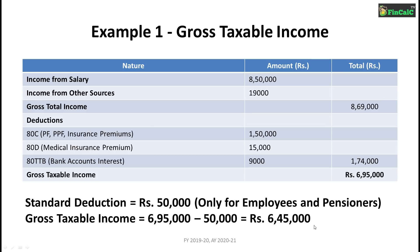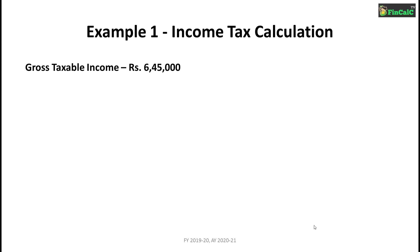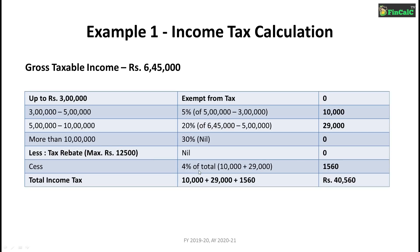The deduction under Section 80TTB is Rs 9,000, making total deductions Rs 1,74,000, which brings your gross taxable income to Rs 8,69,000 minus Rs 1,74,000, equal to Rs 6,95,000. A standard deduction of Rs 50,000 applies for financial year 2019-20, making your gross taxable income Rs 6,45,000. There is no income tax for income up to Rs 3,00,000; 5% tax on income between Rs 3,00,000 to Rs 5,00,000 gives Rs 10,000; and 20% on income between Rs 5,00,000 to Rs 6,45,000 gives Rs 29,000. Since gross taxable income is above Rs 5,00,000, the tax rebate of Rs 12,500 will not be applicable.